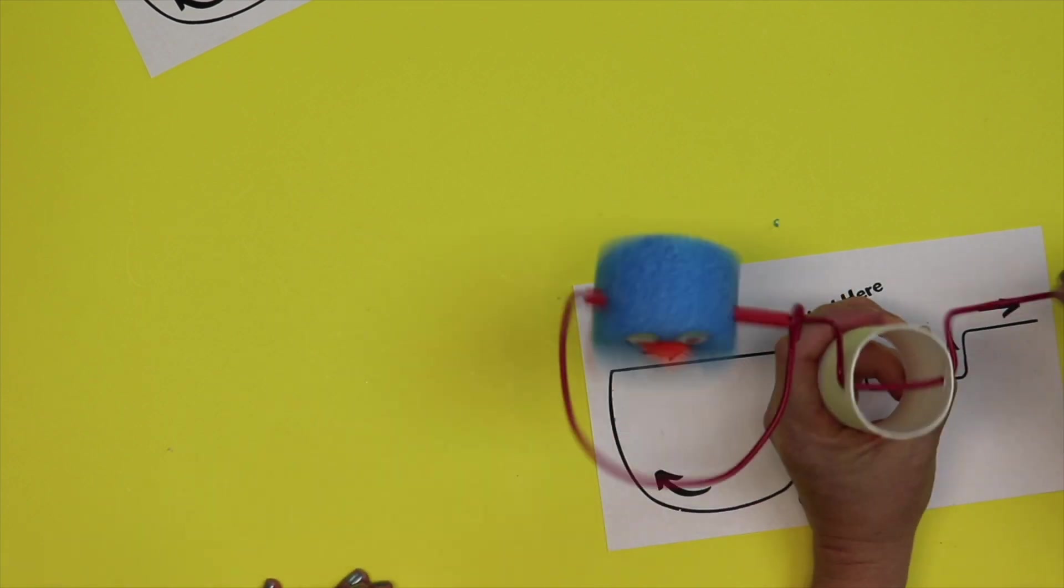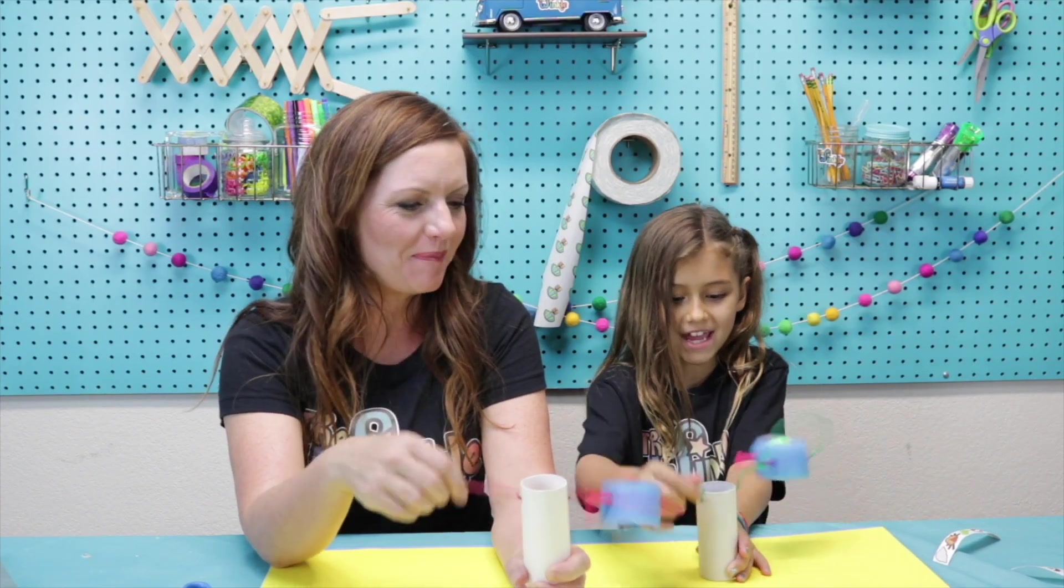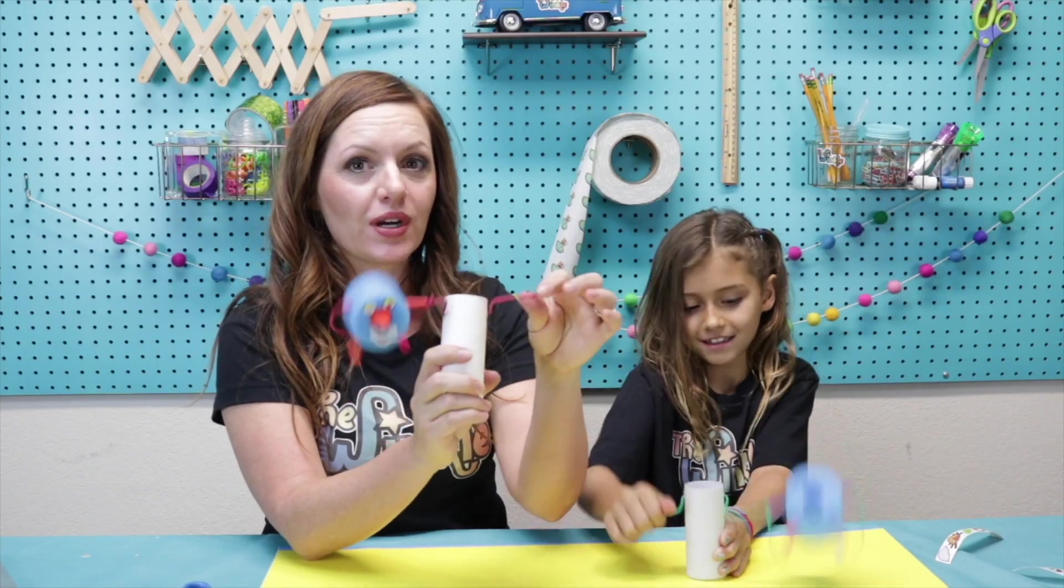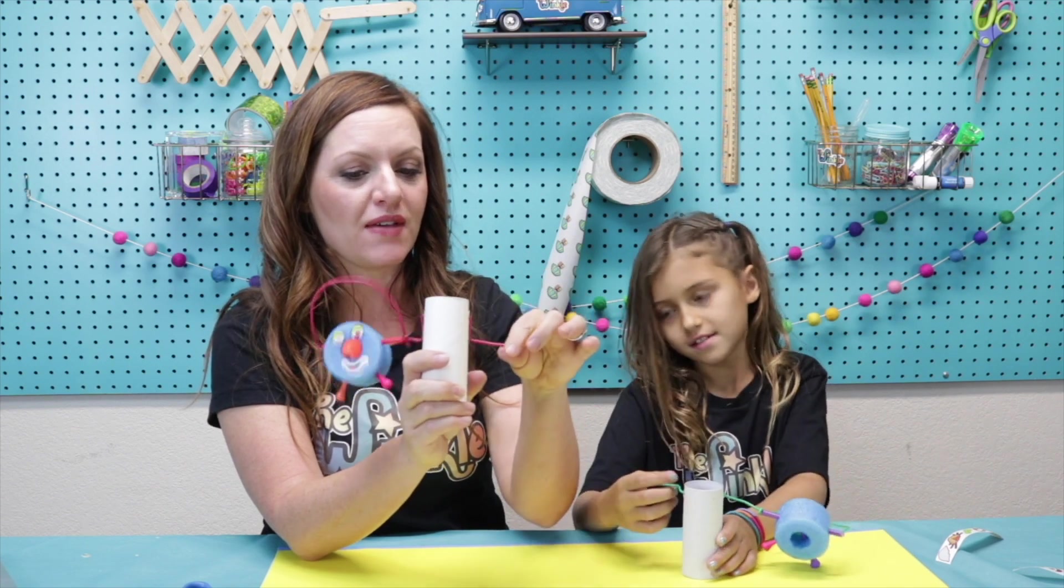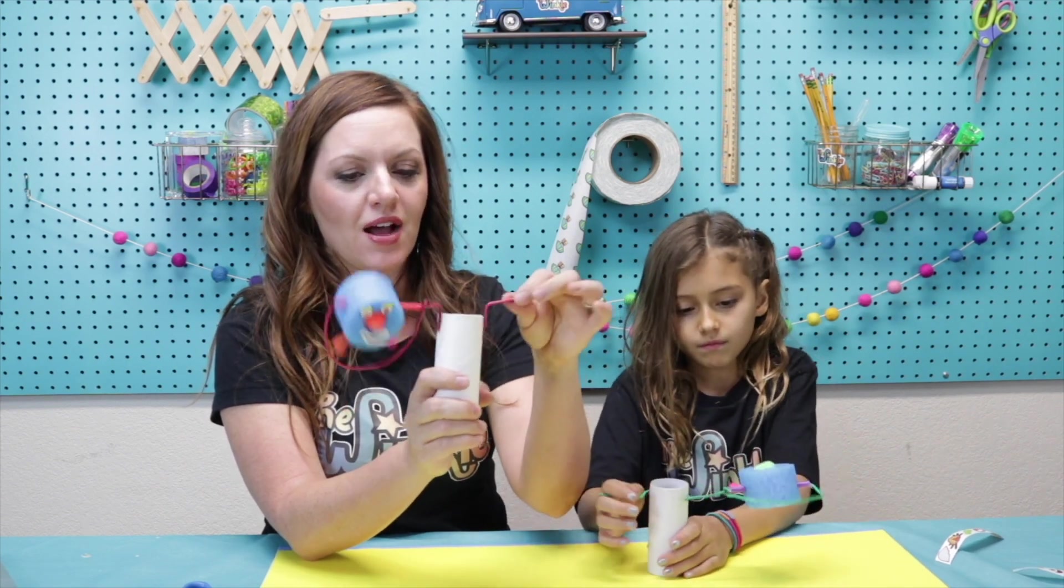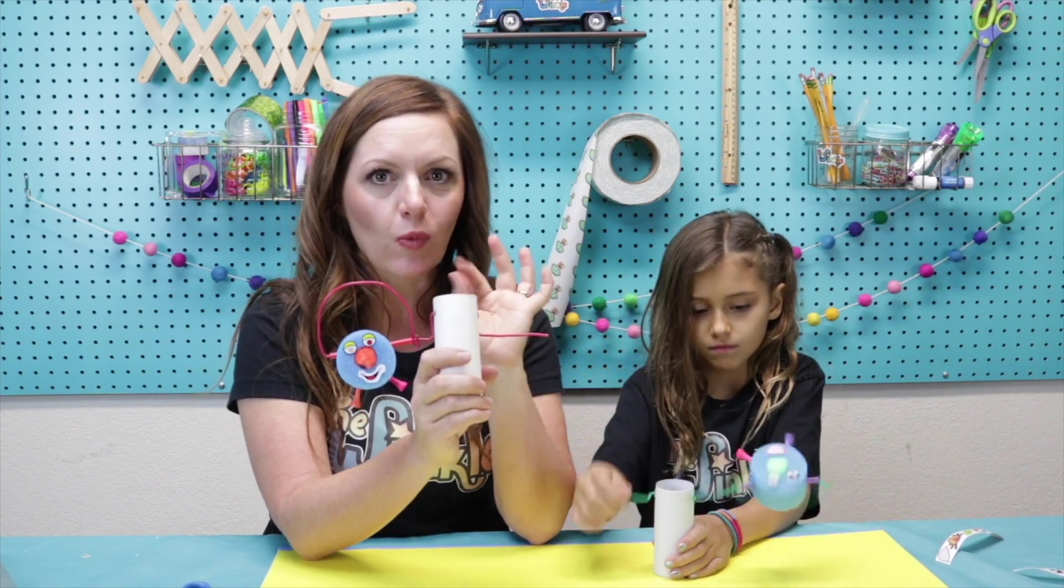You know what, you could even do one on the other side too if you want. Even though you don't have another puff ball. Why not? Good. And now you have Jumpin' Joey! Jumpin' Joey! Okay, the reason this is working, remember, is because of the pivot point. And as long as that's balanced, it'll work perfectly.